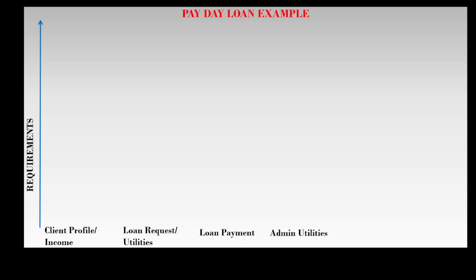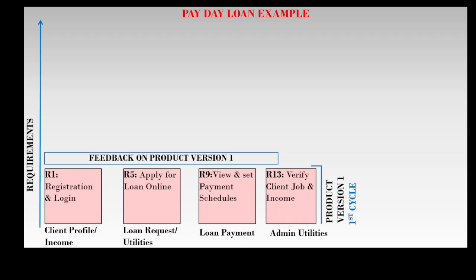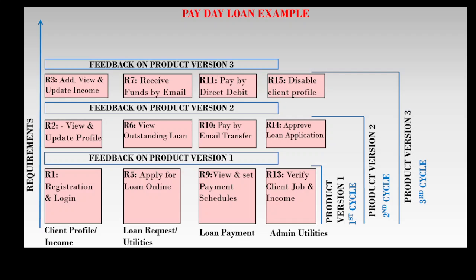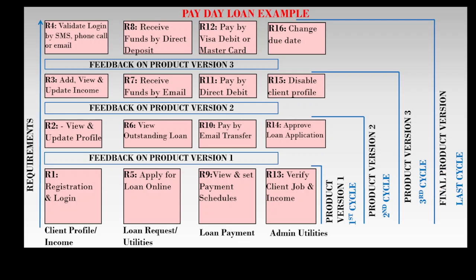For the payday loan example, in the first cycle the first product version is built but not delivered and feedback is received. This feedback is used to modify the first product version in the second cycle, and new features — view and update profile, view a standard loan paid by email transfer, and approved loan application — are also developed to create a second product version, which is not delivered but feedback is received. Likewise, in the third cycle the third product version is created, not delivered, and feedback is received.